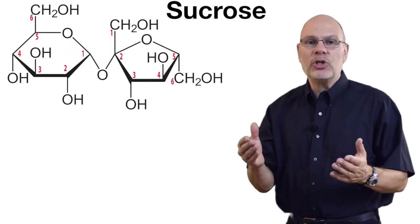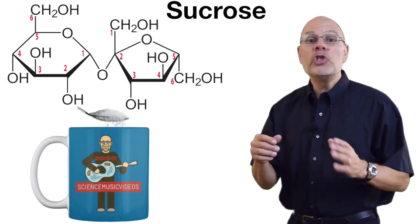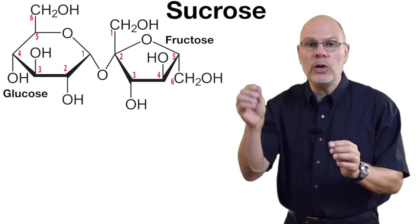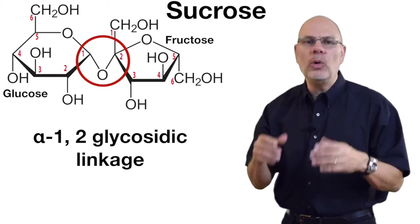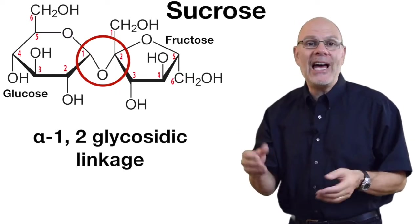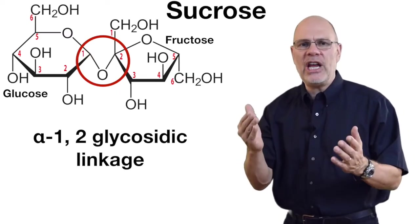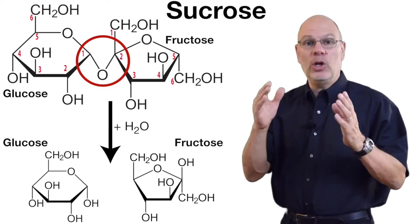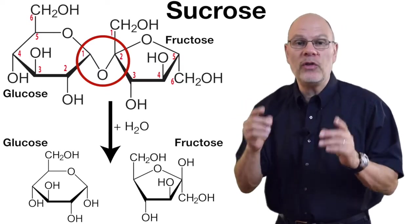Here's the disaccharide sucrose. It's table sugar, and it's what we put into our coffee and tea. Sucrose consists of a glucose connected to a fructose, and the bond between them is an alpha-1,2 glycosidic linkage. It's another covalent bond with a different shape. We have enzymes that can break it apart, releasing glucose and fructose that our cells can absorb and use for energy.